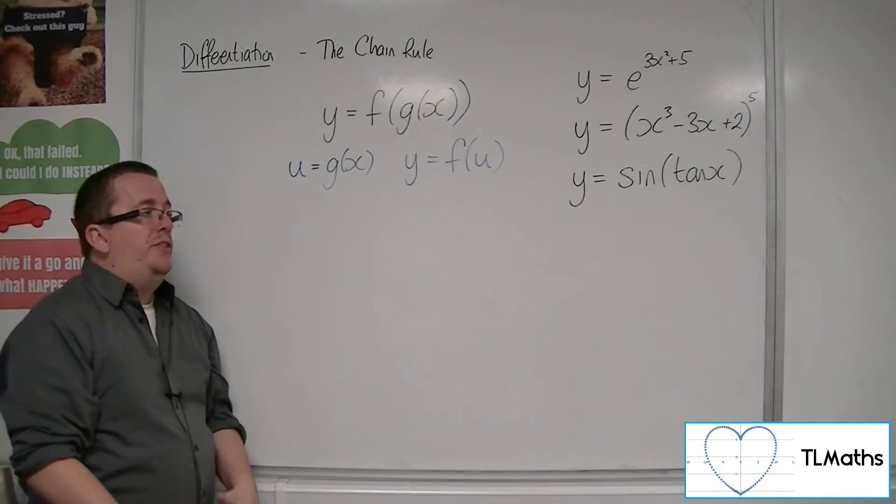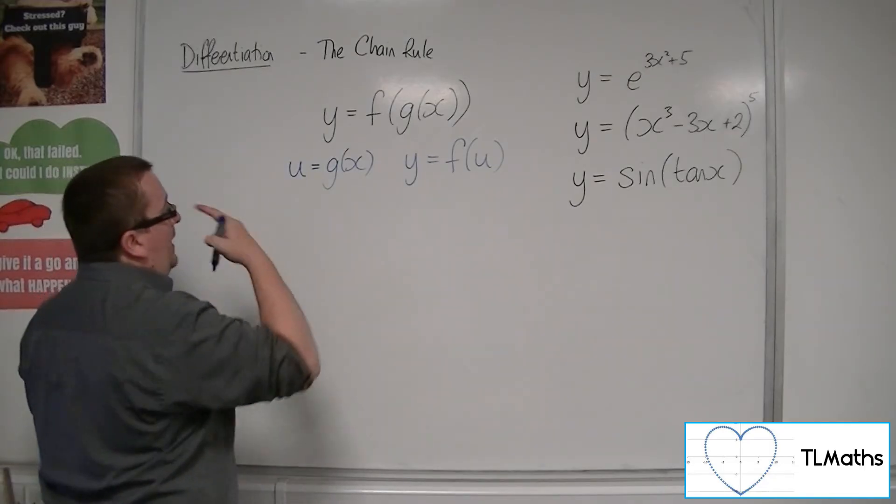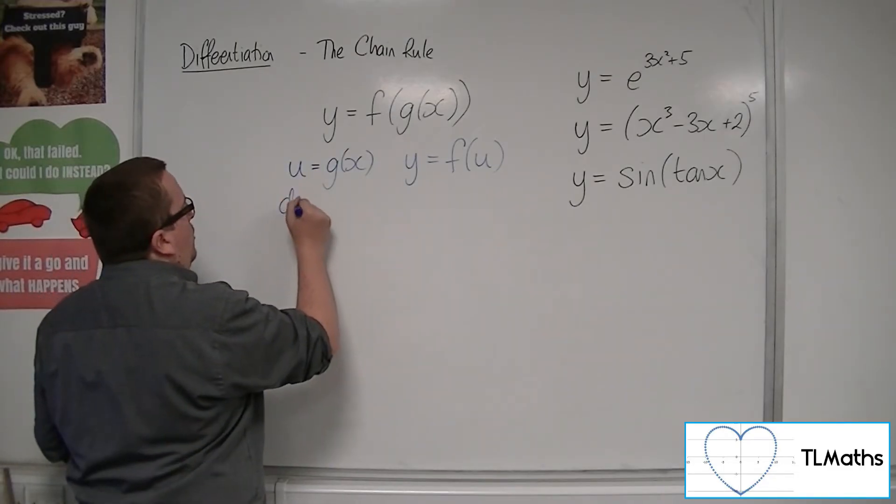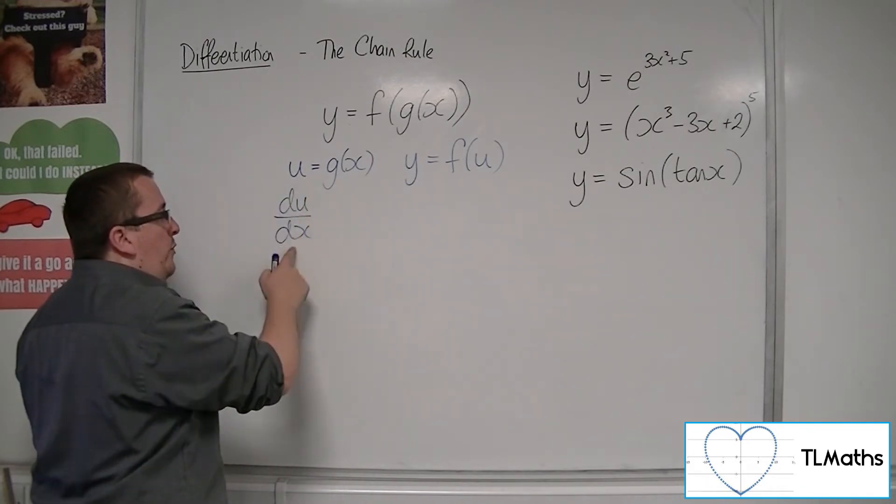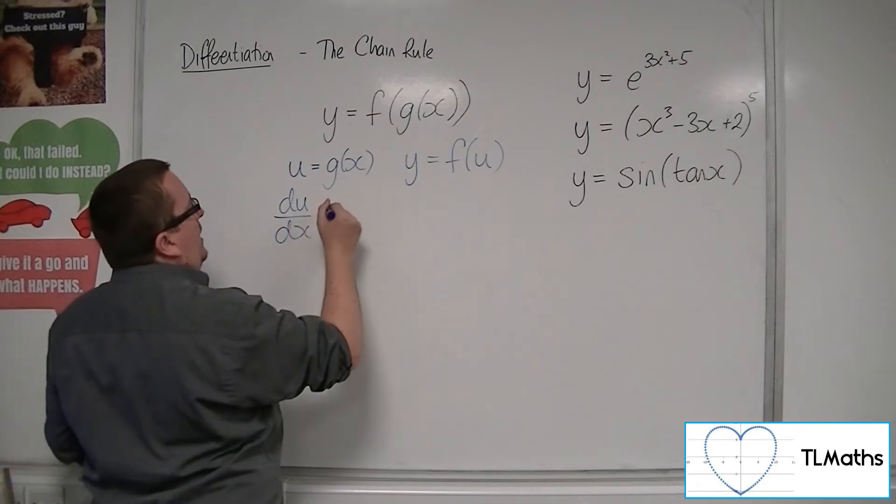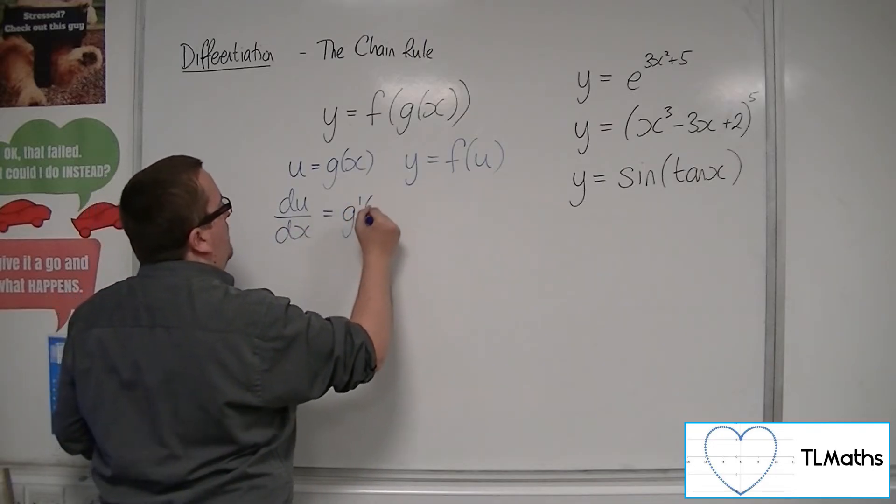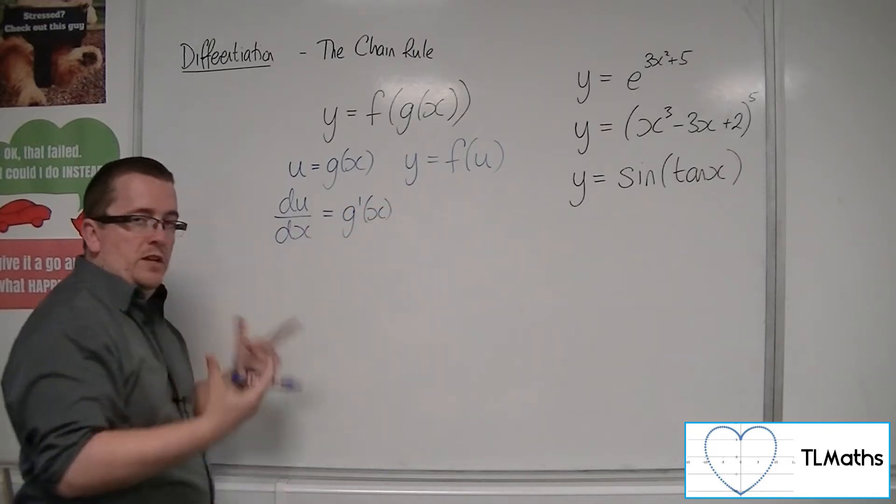Now what we then want to do is differentiate each of those. So we differentiate the first one, the u equals g of x, with respect to x, and we would get g prime of x - the first derivative of g.